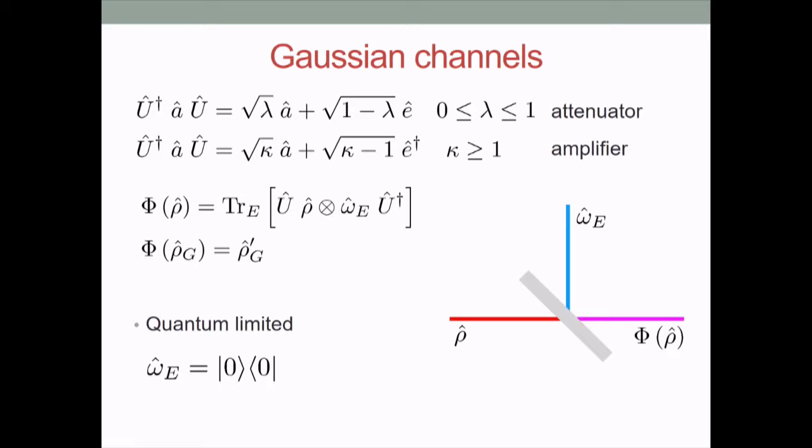There is a second kind of Gaussian quantum channel called the amplifier. It is similar to the attenuator, but the difference is that the unitary operator U implements a two-mode squeezing between the input state and the environment state. While you can implement a beam splitter with passive elements requiring no energy, here you need energy to implement this two-mode squeezing. Indeed, even if the environment state and the input state are both in the vacuum, you will get a thermal state with some positive temperature at the output.